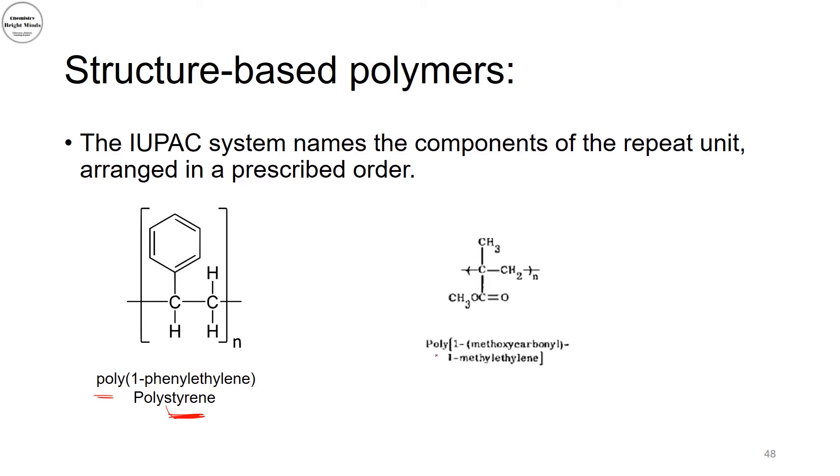Now for methyl methacrylate, the scientific name for the monomer is 1-methoxycarbonyl-1-methylethylene. This is why when we form the polymer, we will just add the prefix poly at the beginning of my naming. Another way of the structure-based naming would be poly-1-methoxycarbonyl-1-methylethylene.